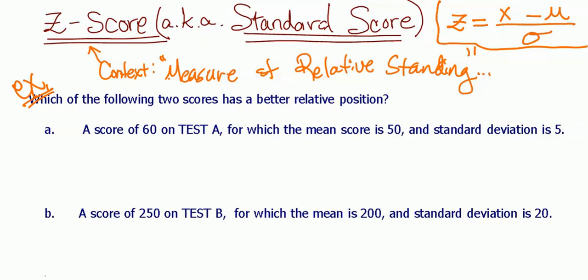Which of the following two test scores has a better relative position? A score of 60 on test A, for which the mean score is 50, and standard deviation is 5. So whatever test, whatever class this is, your score is 60, and the average for the class is 50, standard deviation is 5. That's the spread, all right, spread out data.